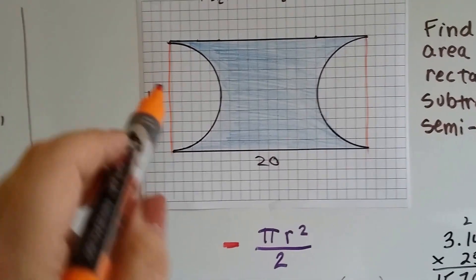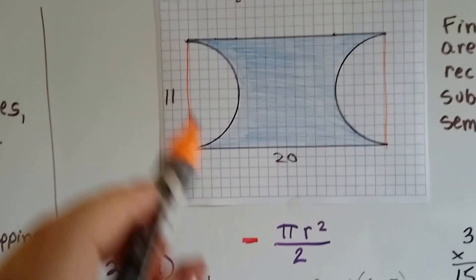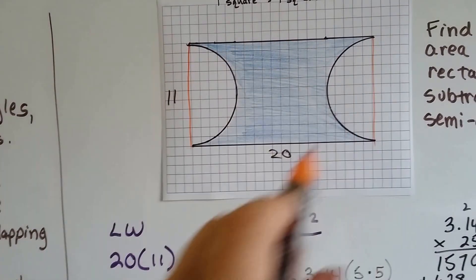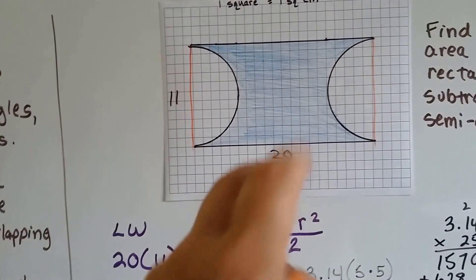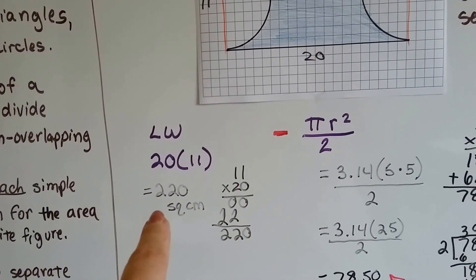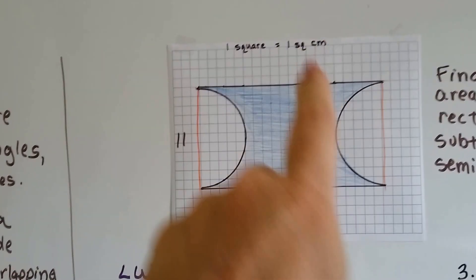If we know this side is 11 and that side is 20, length and width for a rectangle will give us the area of this entire rectangle including the missing areas. 11 times 20 is 220 square centimeters.